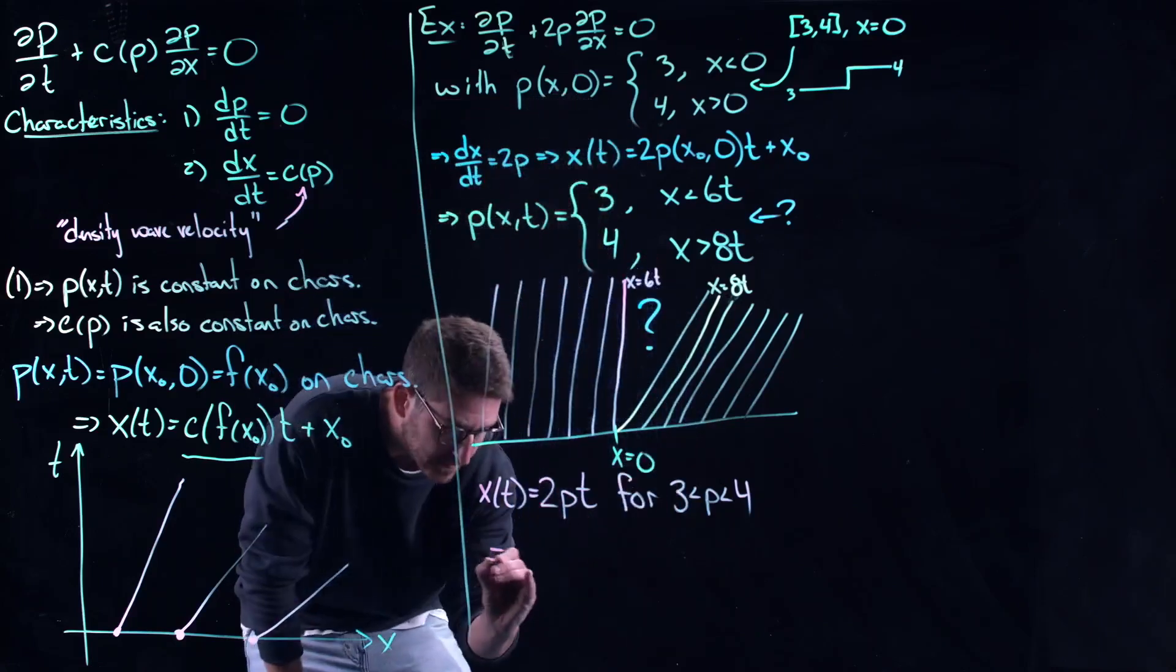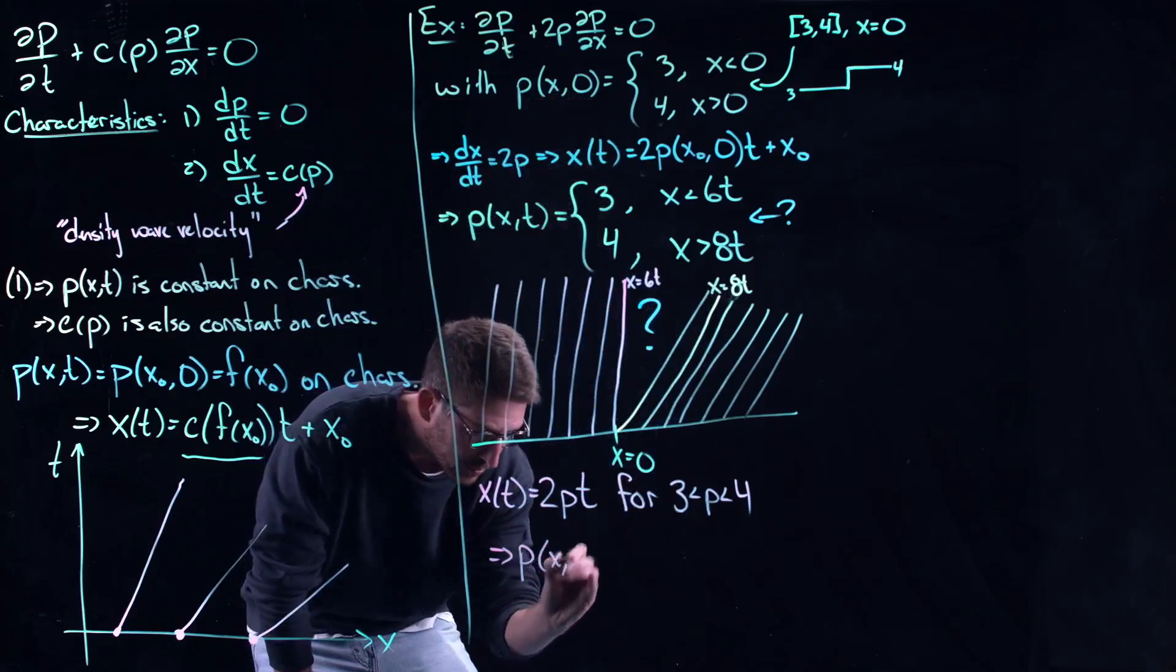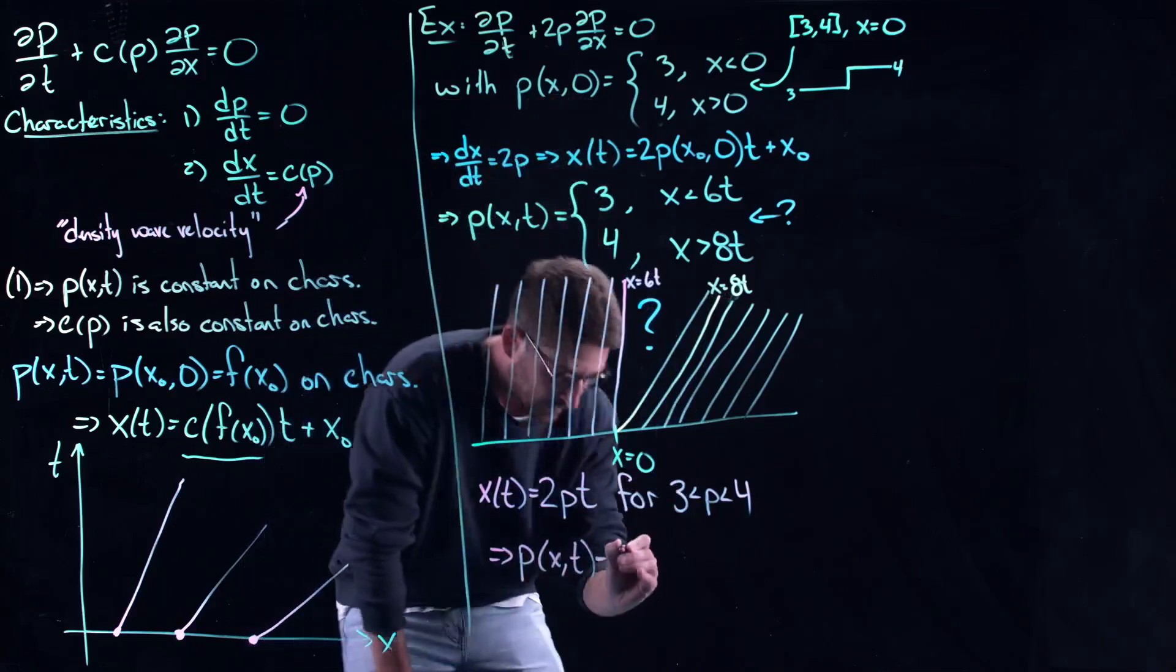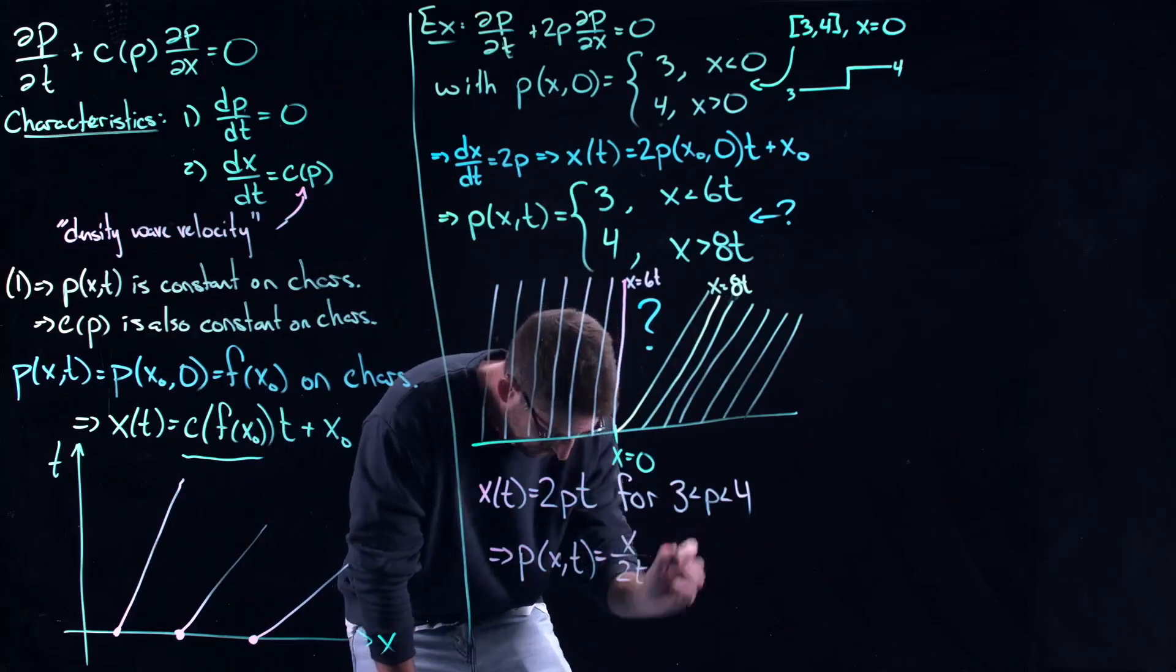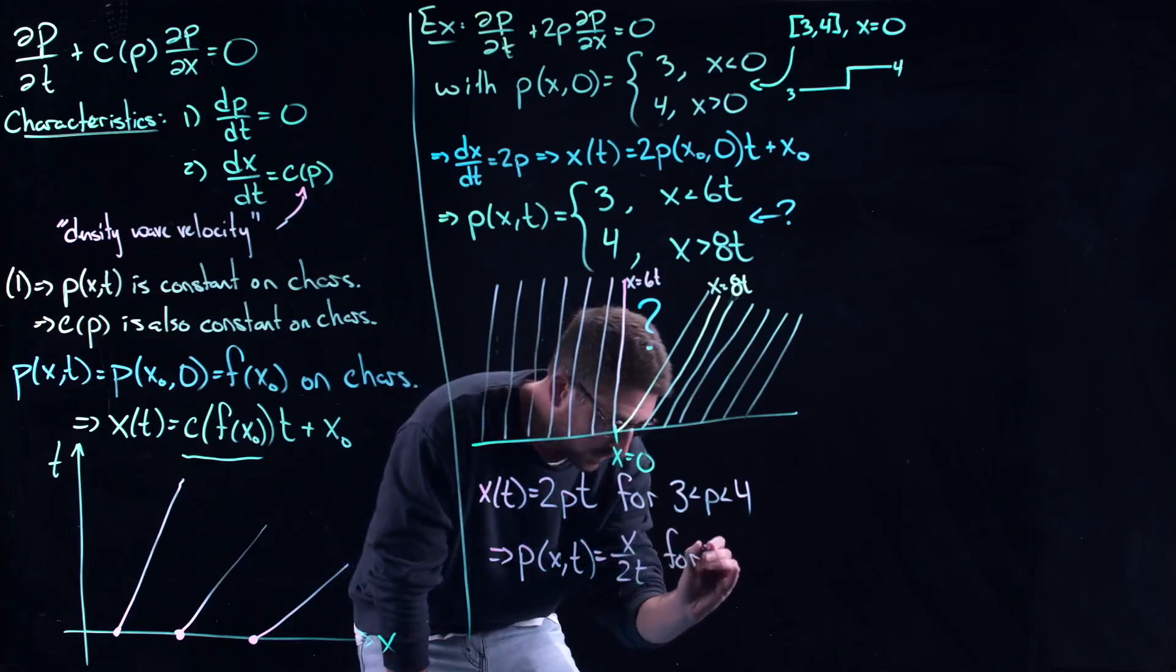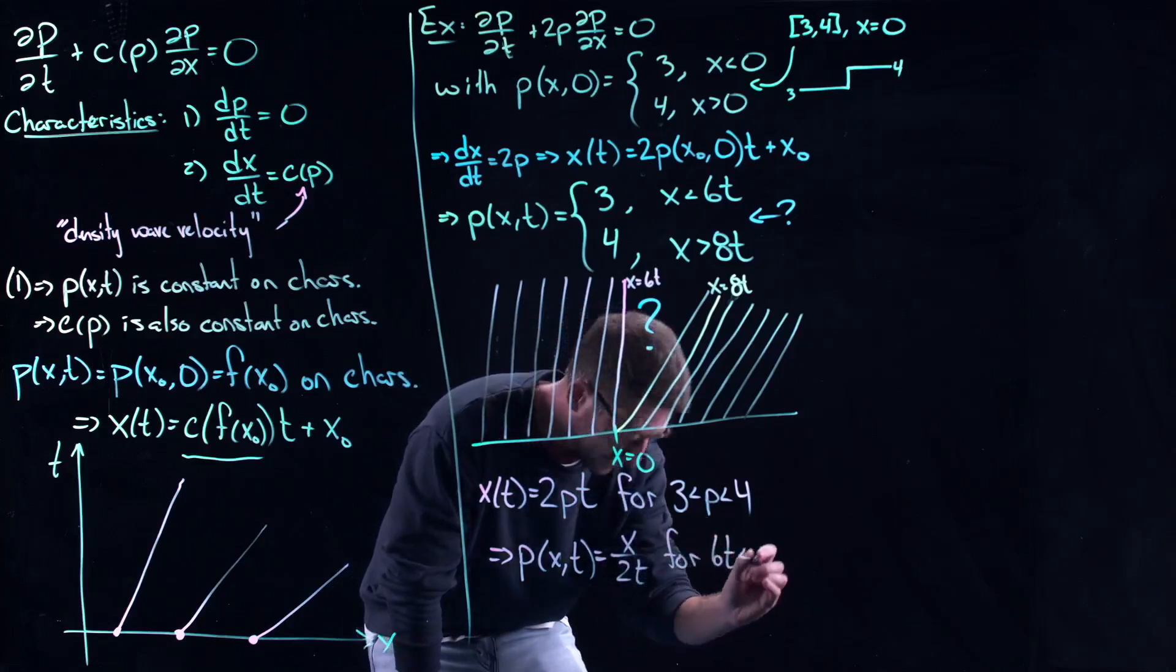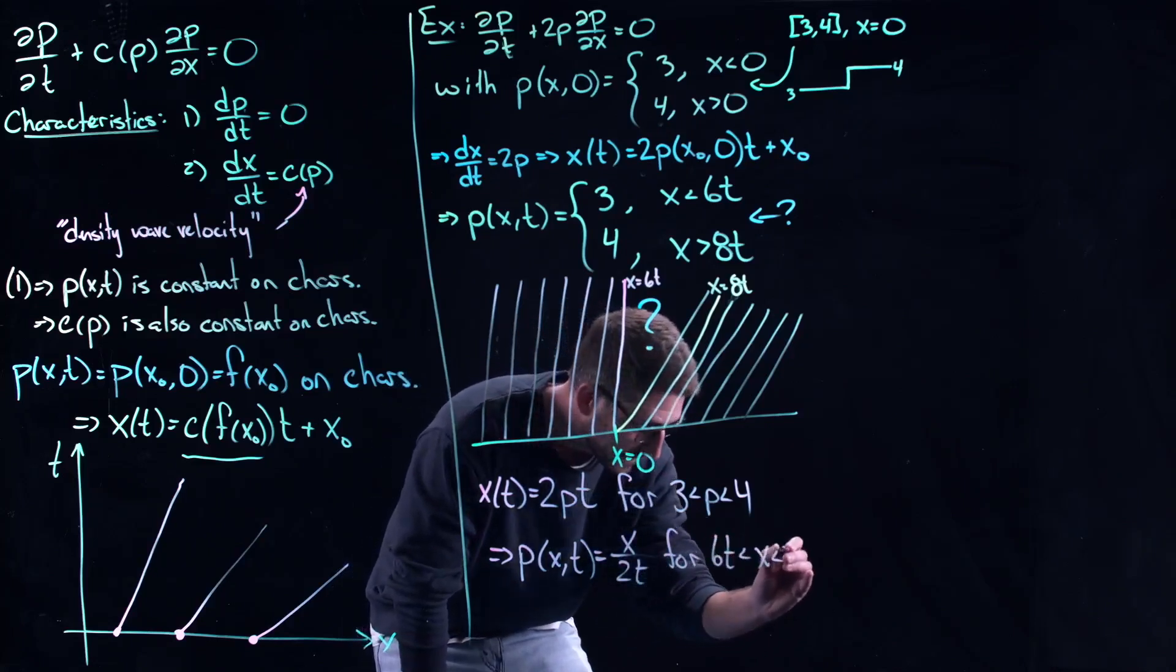And what this says is that the function actually looks like this: it looks like x/(2t) for 6t less than x less than 8t.